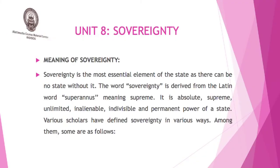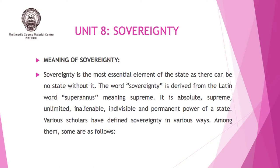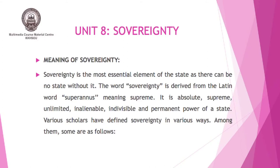Before we proceed further, first we should know the meaning of sovereignty. Sovereignty is the most essential element of the state, as there can be no state without it. The word sovereignty is derived from the Latin word 'supernus' which means supreme. It is absolute, supreme, unlimited, inalienable, indivisible, and permanent power of a state.